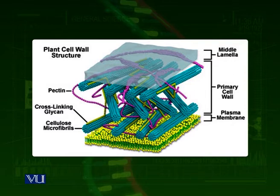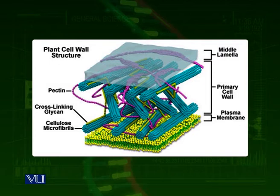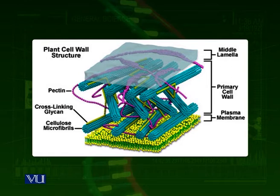Then you can see there is a third molecule called pectin. Pectin is also attached at a different angle to the cellulose microfibrils. Pectin is a material present in jams and jellies, used to solidify or convert them into a gel. What does pectin do? It attracts water molecules and calcium molecules and converts the interior of the primary cell wall into a gel-like matrix. Down there you can see the plasma membrane.